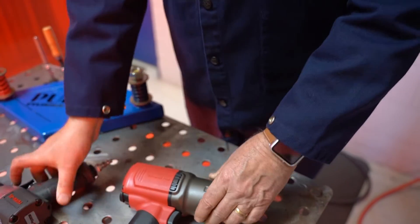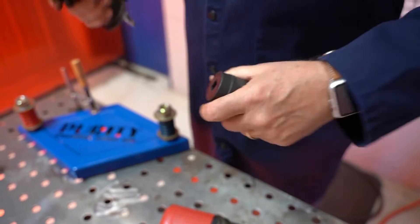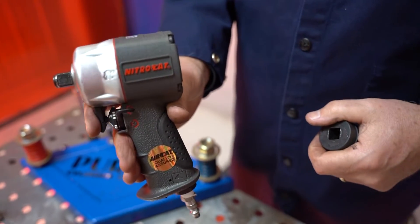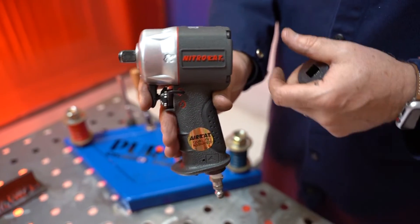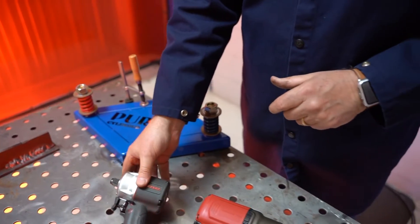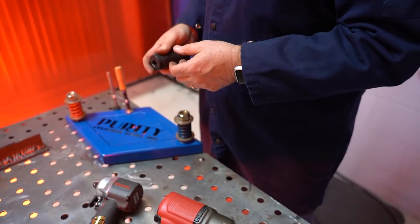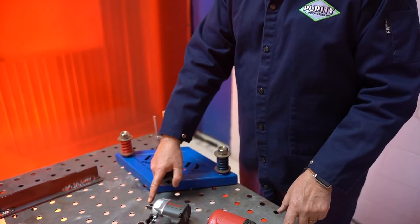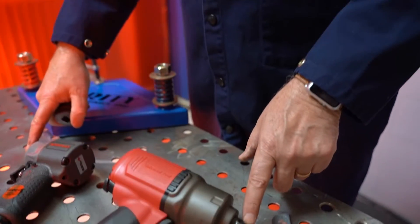And we're also going to look at the AirCat stubby impact wrench, half-inch drive, under the NitroCat brand. Both tools are half-inch drive. When we say half-inch drive, we're talking about the business end and the size of the square drive on each tool.